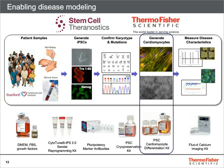One promise of PSC-derived cardiomyocyte models is the ability to model disease. To illustrate this, Thermo Fisher recently partnered with Stem Cell Theranostics. As a startup company, one of their first goals was to establish standardized SOPs, reagents, and processes that are consistent and reproducible. After obtaining fibroblasts or blood samples from the Stanford Cardiovascular Institute Biobank, they expand those cells and reprogram them to iPSCs using the CytoTune Sendai virus reprogramming kit. iPSCs are then expanded in Essential 8 medium and characterized for pluripotency markers. After confirming normal karyotype, cell banks are created using the PSC cryopreservation kit. To create patient-derived cardiomyocytes, they now routinely use the PSC Cardiomyocyte Differentiation Kit.